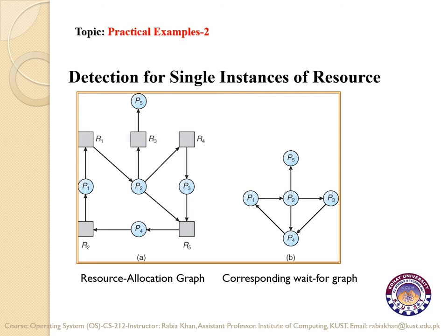An edge from P1 to P2 will be directly drawn, eliminating the resource R in between. Then circles in the wait-for graph will be detected to check if the system is in deadlock or livelock. You can see here the corresponding wait-for graph in which we have reduced the graph by eliminating resources, creating direct connections between processes. If there are circles, that would be a deadlock. If there are circle breakers, then that situation would be a livelock.